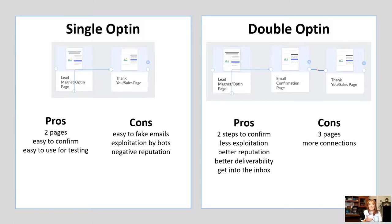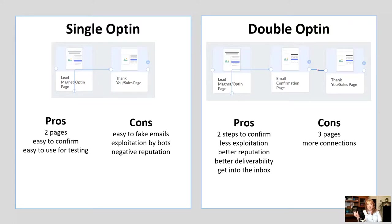Now let's talk about double opt-in. First, we'll look at the blueprint. The blueprint is three pages. You're going to have a lead magnet opt-in page where they put in their information. When they click submit, they'll go to an email confirmation page, which is designed to tell them to go check their email and click confirm. Once they do that, they'll be sent to the thank you page or the sales page. So it's several steps, but there are some pros and cons.